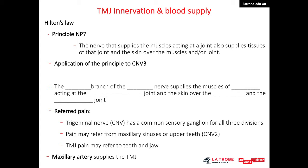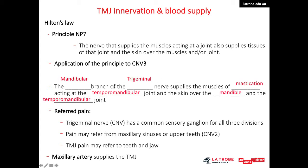Regarding nerve supply, Hilton's law is applied to the temporomandibular joint. This principle states that the nerve supplying the muscles acting at the joint also supplies the tissues of that joint and the skin over the muscles and joint. The main nerve supply to the TMJ is the trigeminal nerve, specifically the mandibular branch. The mandibular branch supplies the muscles of mastication acting at the TMJ and the skin over the mandible and the temporomandibular joint.